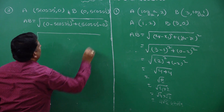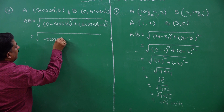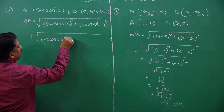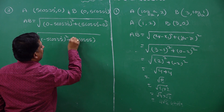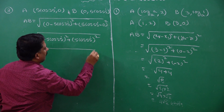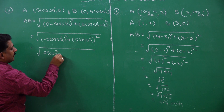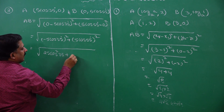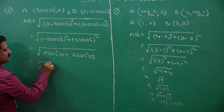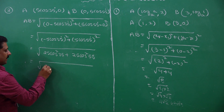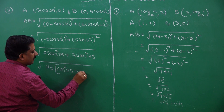Here the root of (0 minus 5 cos 35 degrees) becomes minus 5 cos 35 degrees whole square, plus 5 cos 55 degrees whole square. This gives us 25 cos squared 35 degrees plus 25 cos squared 55 degrees. I can take 25 as common, giving: root of 25 times (cos squared 35 plus cos squared 55).